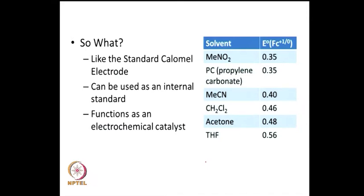You might wonder: if there are no changes in bond distances and if it is going to be a reversible transfer, what is the use? In electrochemistry, we usually use the standard calomel electrode as a reference point. In some systems where the standard calomel electrode cannot be used, it is necessary to use a secondary standard, and ferrocene serves exactly that purpose.